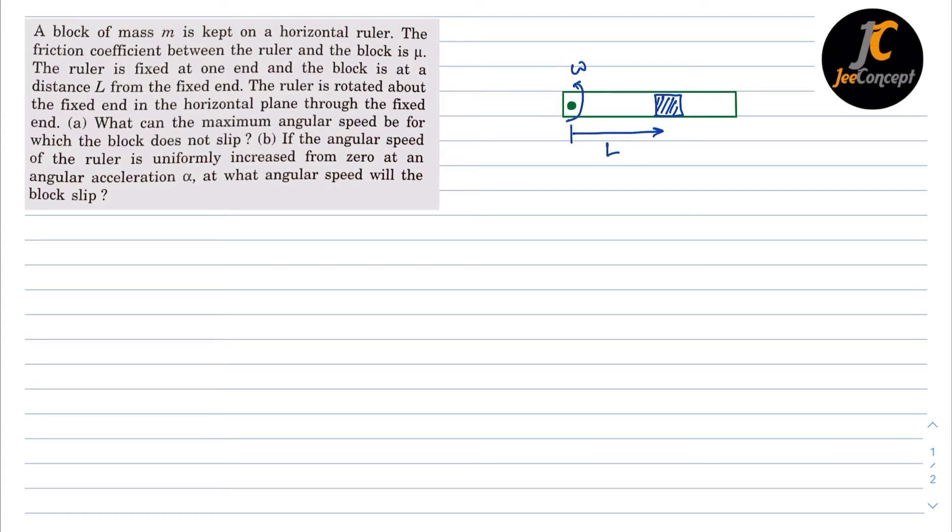So the first instant when the block does not move. In that case, when the ruler is rotating, mv square by r or m r omega square force will act outward direction and the frictional force will act against the centrifugal force.